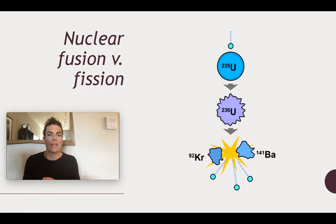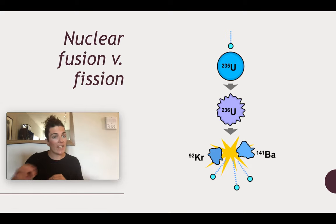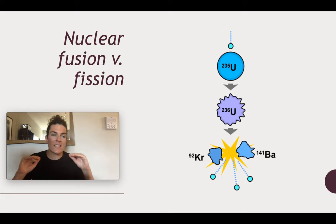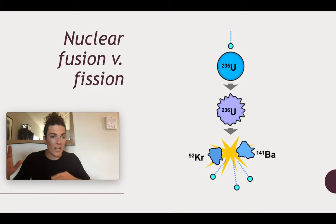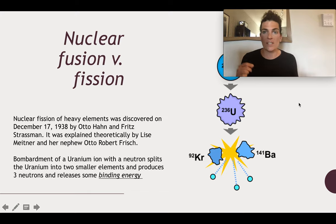When it breaks apart, it forms two new atoms and produces a lot of energy. Most importantly, we hit it with one extra neutron, but the instability of the reaction actually releases three neutrons. So one goes in, three come out, along with a lot of energy. This is important because the way we make this work for electricity and energy production is through a process known as a chain reaction.